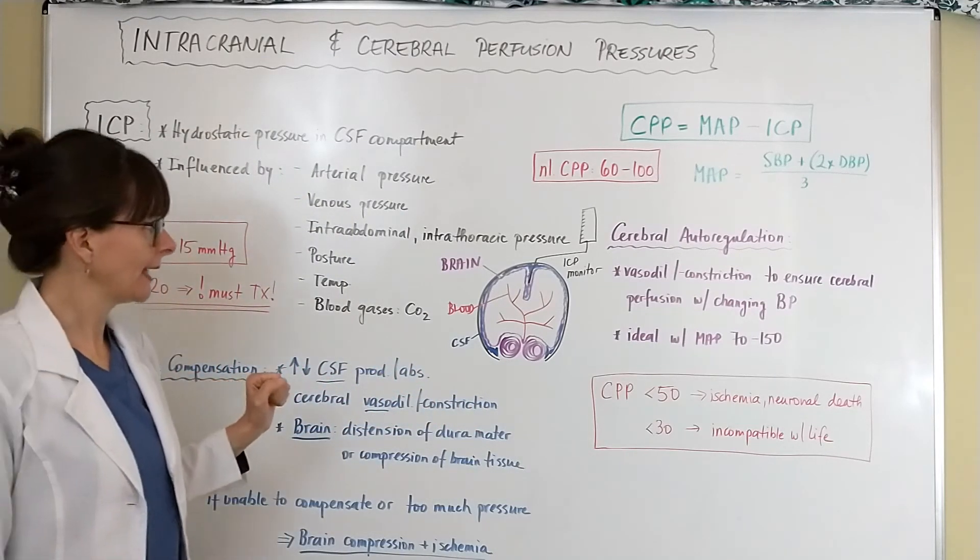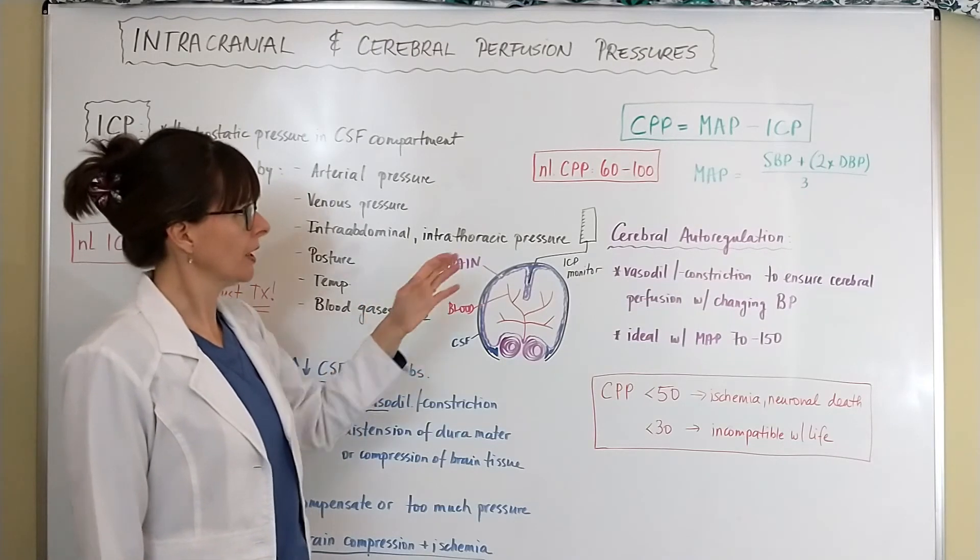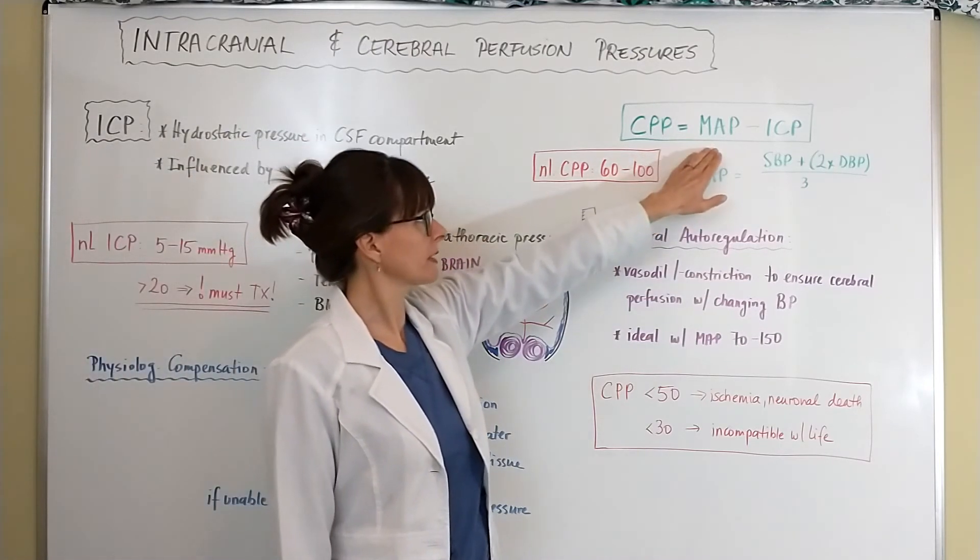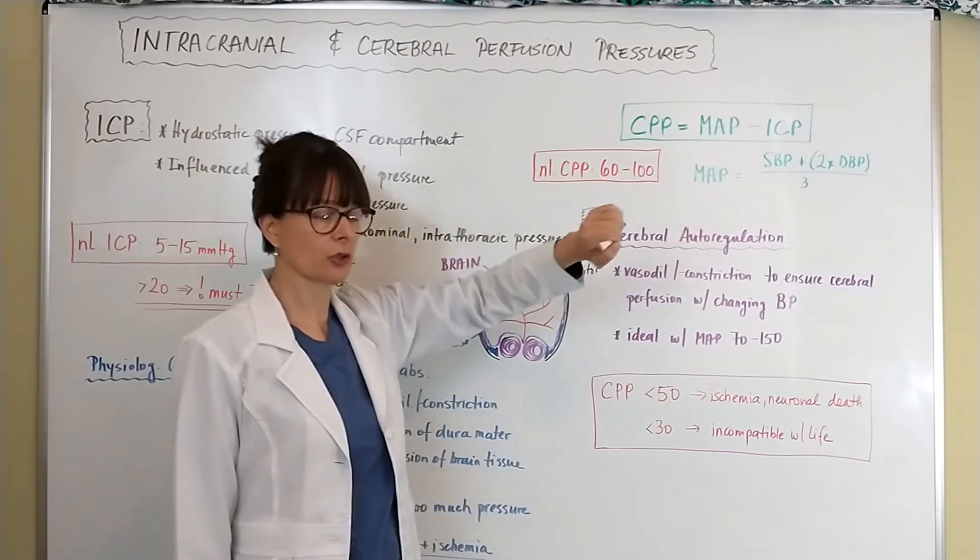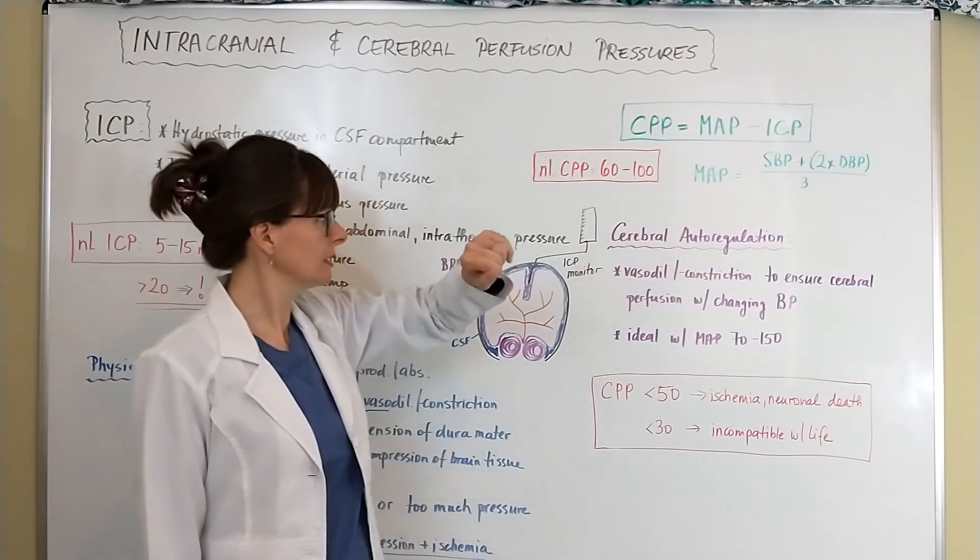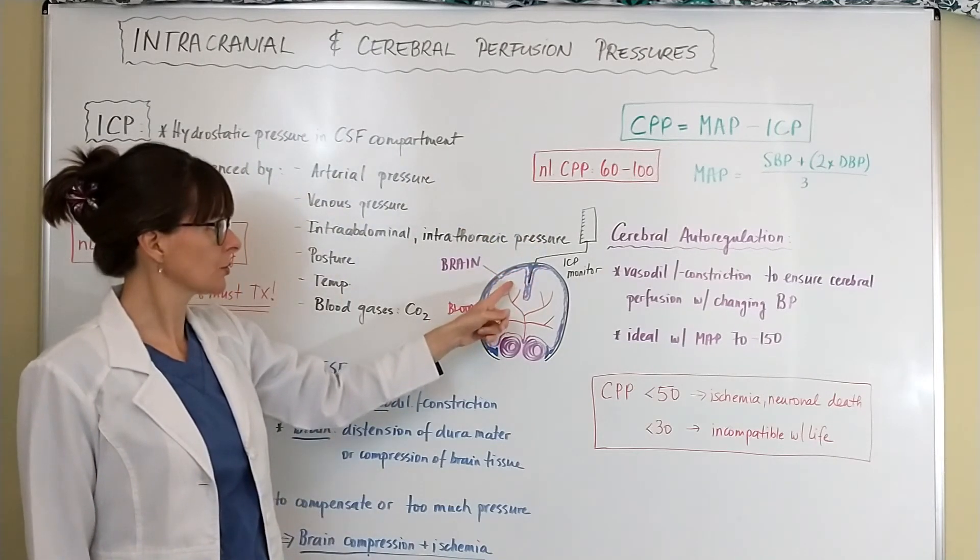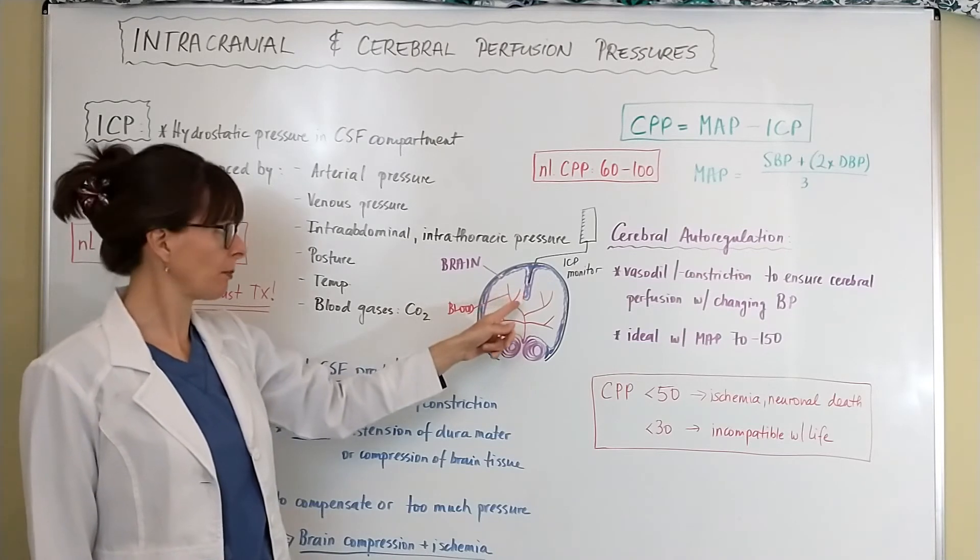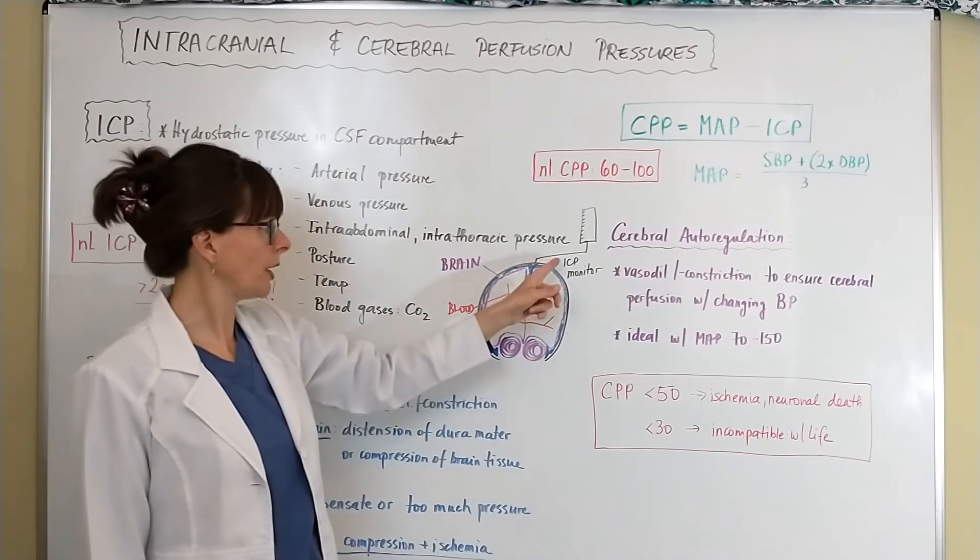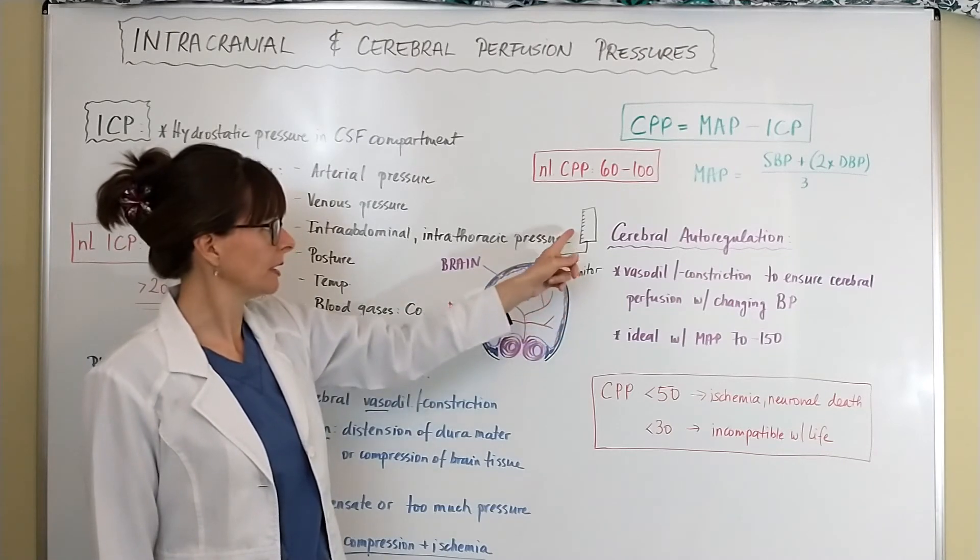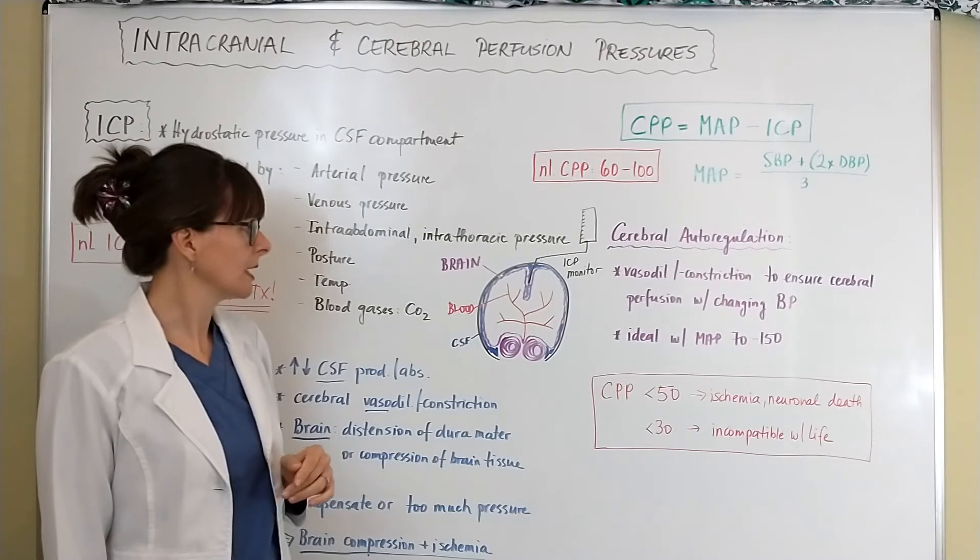And then really the only thing that we can measure here in this formula is the MAP and the ICP. The MAP I already told you how to calculate this, and the ICP is monitored by putting a monitor into the patient's ventricles, into that CSF compartment. That's a very specialized procedure, of course, to monitor the ICP by a certain gauge, and of course that's done in the intensive care unit.